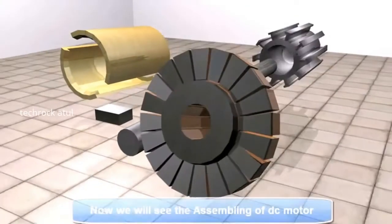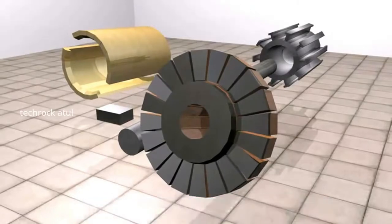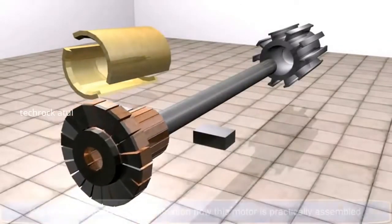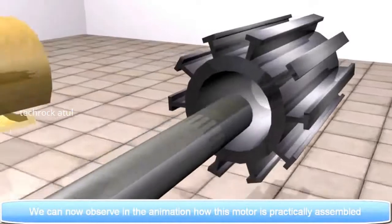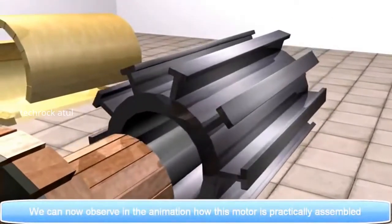Now we will see the assembling of DC motor. We can now observe in the animation how this motor is practically assembled.